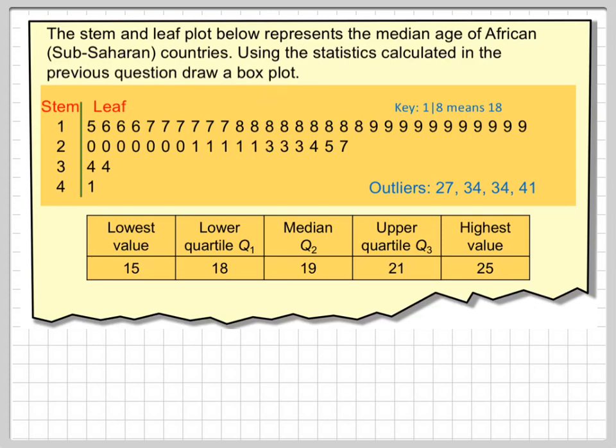So before you're looking at this video you need to look at the one just before this, which is about identifying outliers. So here's my stem and leaf plot. Here are the stems and 18 for example means 18.